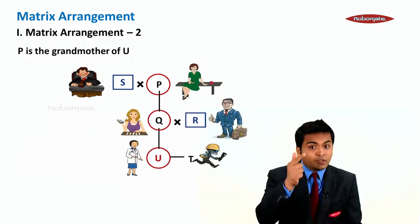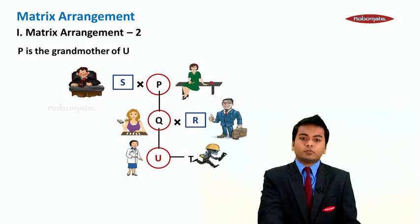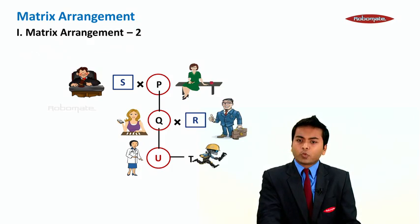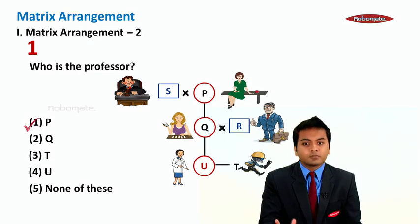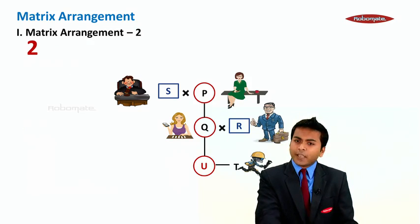Now, if we can see here, P is the grandmother of U. Clear everyone? Okay, let's see the first question. Who is the professor? The professor is P. The second question.